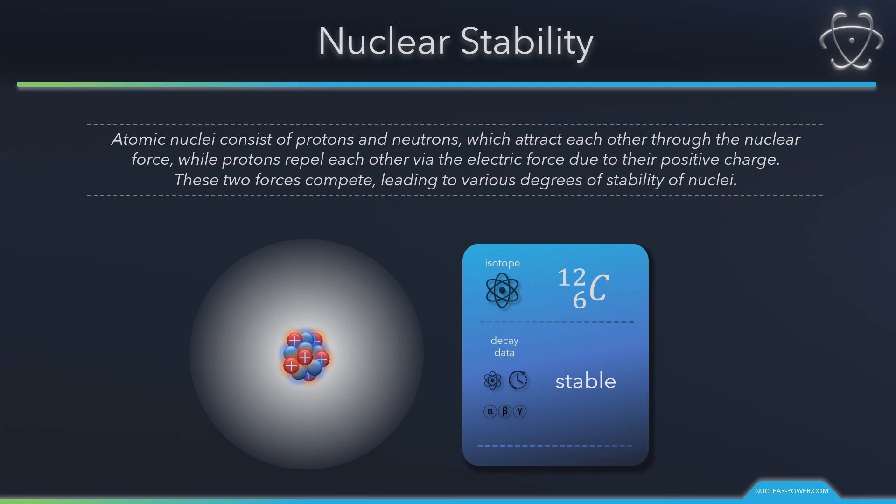The word compete is crucial. There are only certain combinations of neutrons and protons which form stable nuclei. Such as this case of carbon-12, which is one of the most common nuclei in the universe. It contains six protons and six neutrons. In order to understand which combinations are stable and which are not, we need to know the nature of those forces.